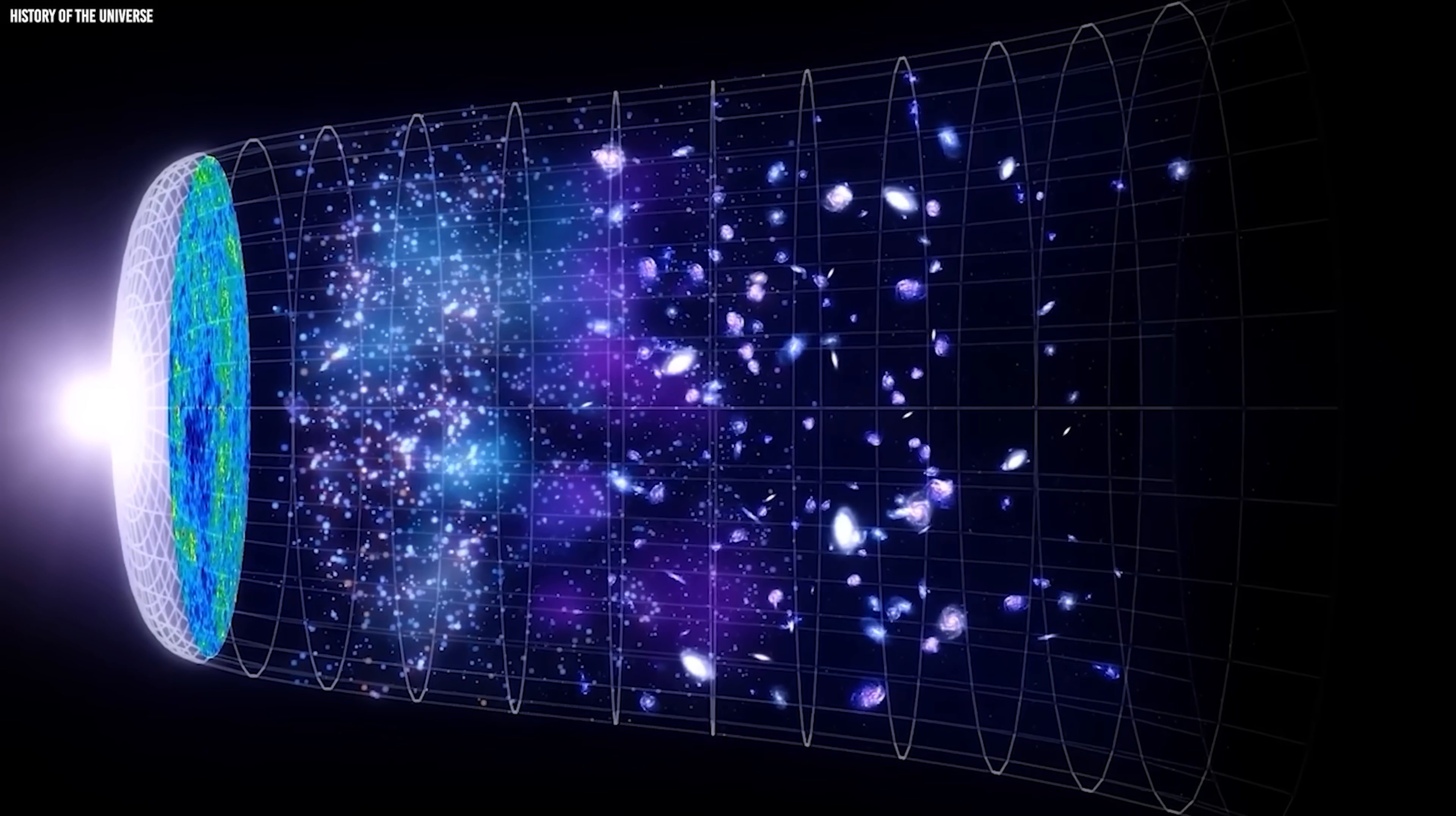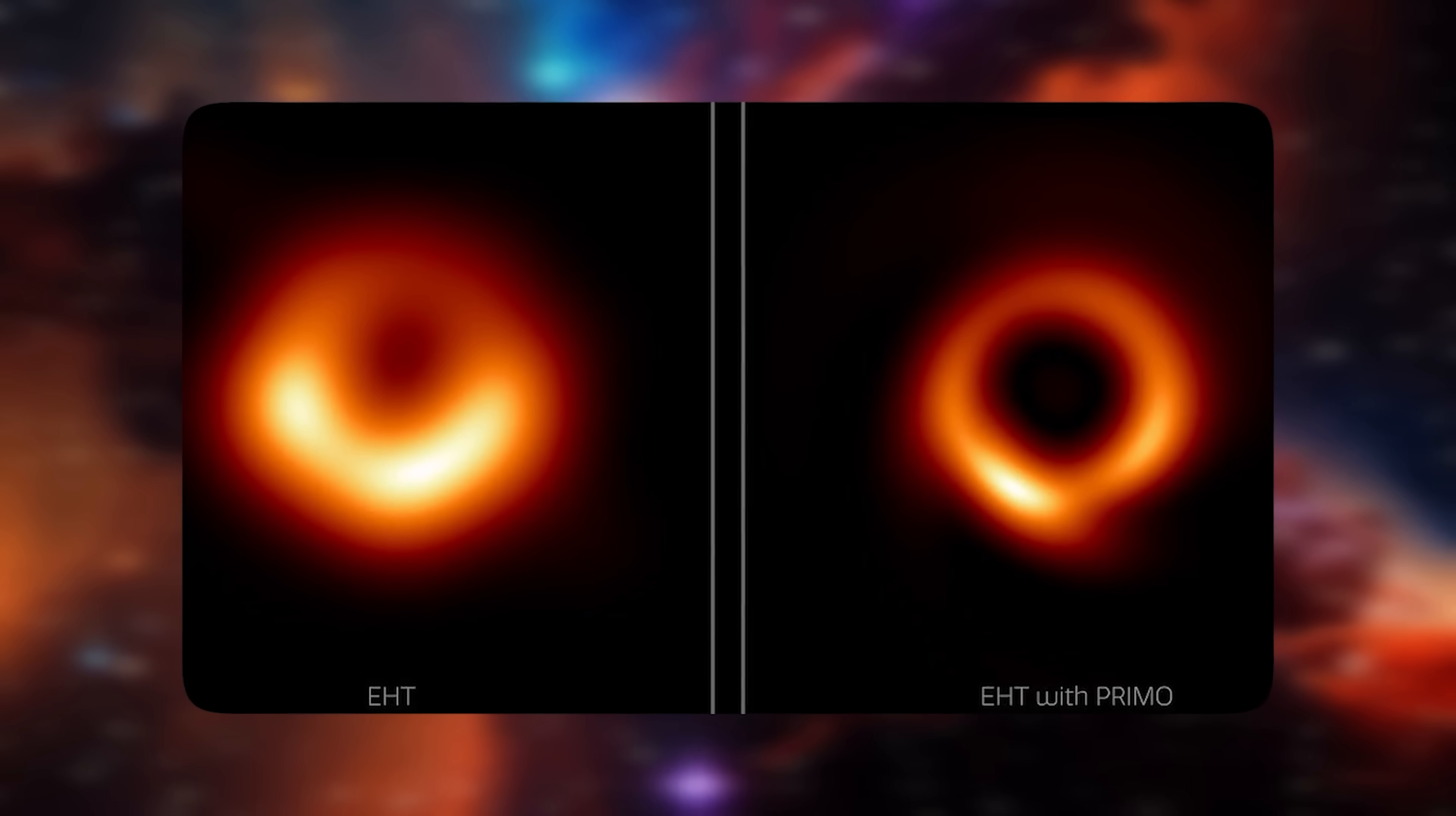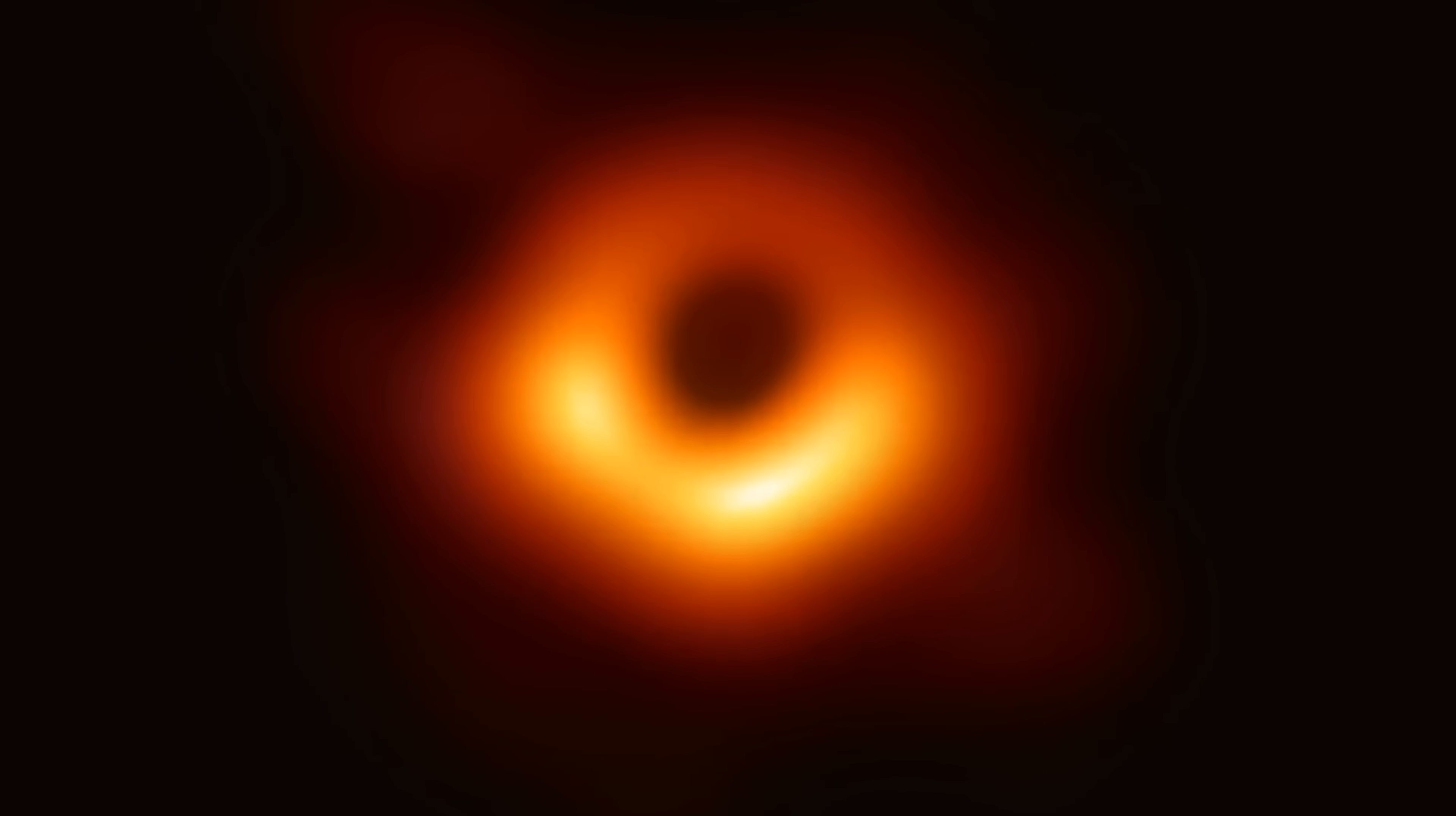The cosmic clock said the universe was only about 500 million years old at the time this light left its source. According to every current model, a black hole this massive shouldn't exist yet. And that was the problem.